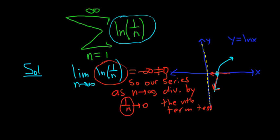So whenever you take this limit and it's not zero, your series automatically diverges by the nth term test. If you get zero, the nth term test is inconclusive. I hope that made sense.